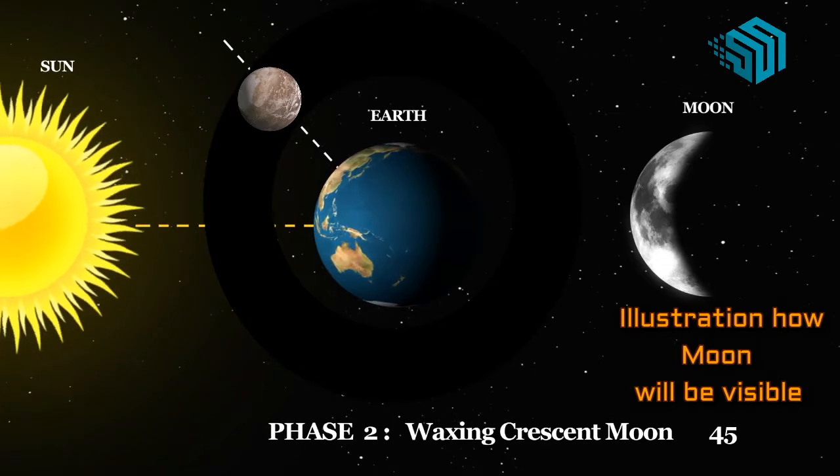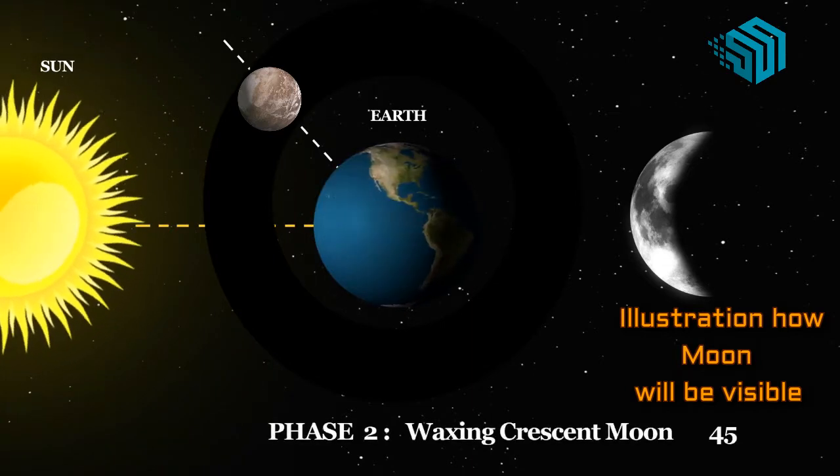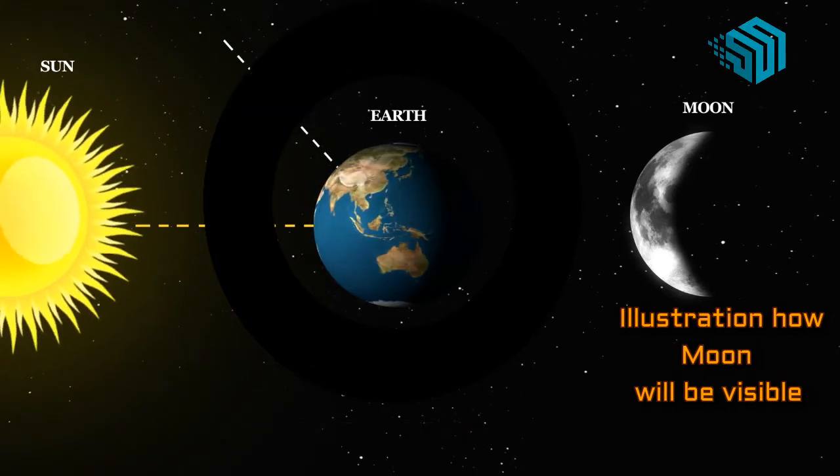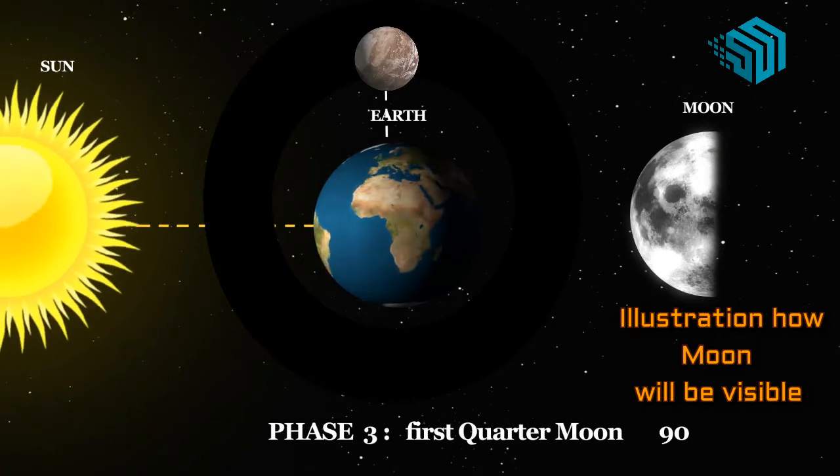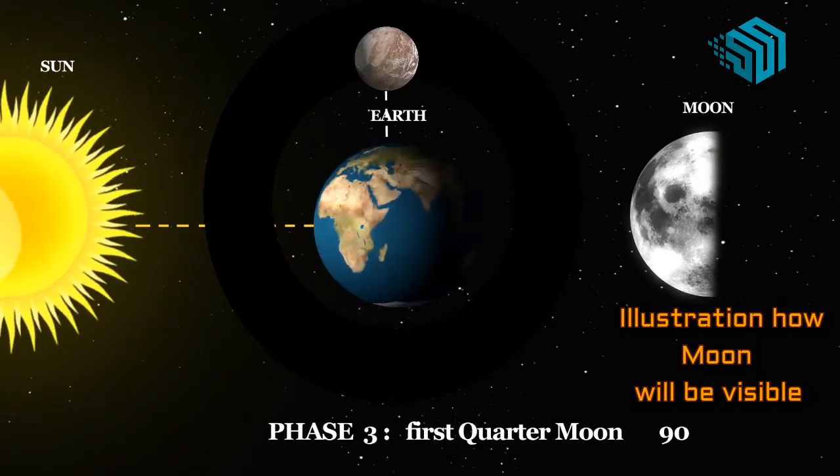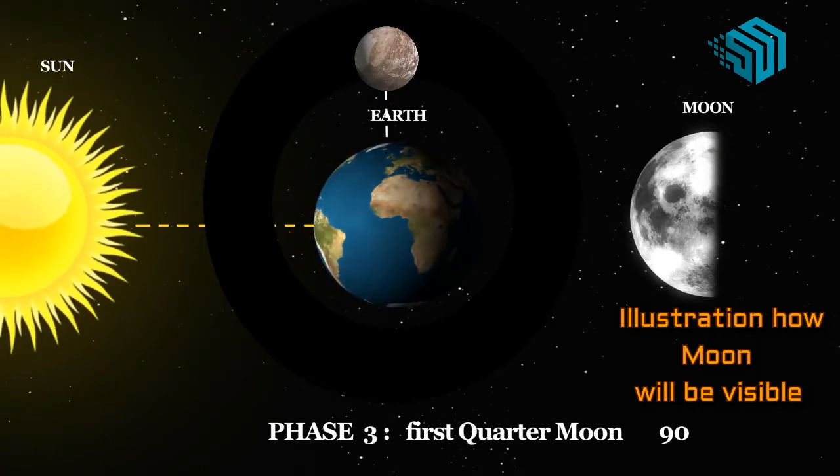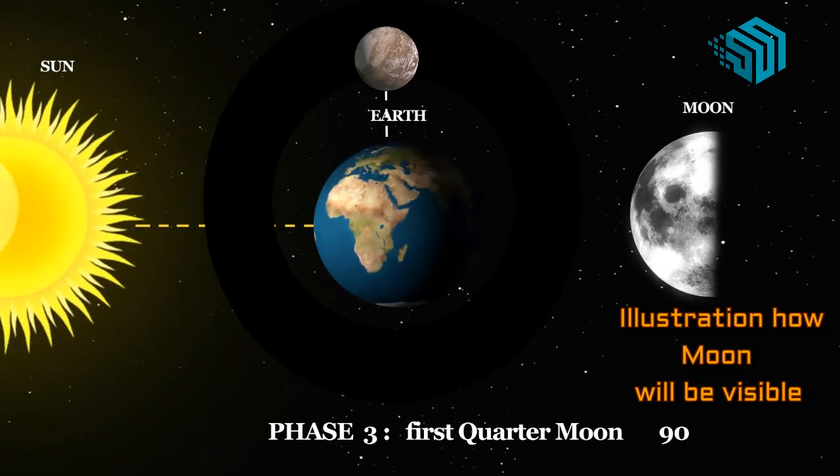Phase two, waxing crescent. After two to three days we see a small part, less than half of the moon. This part that is lit up is called waxing crescent. Phase three, first quarter. Within a week one half of the moon is lit up by the sunlight.